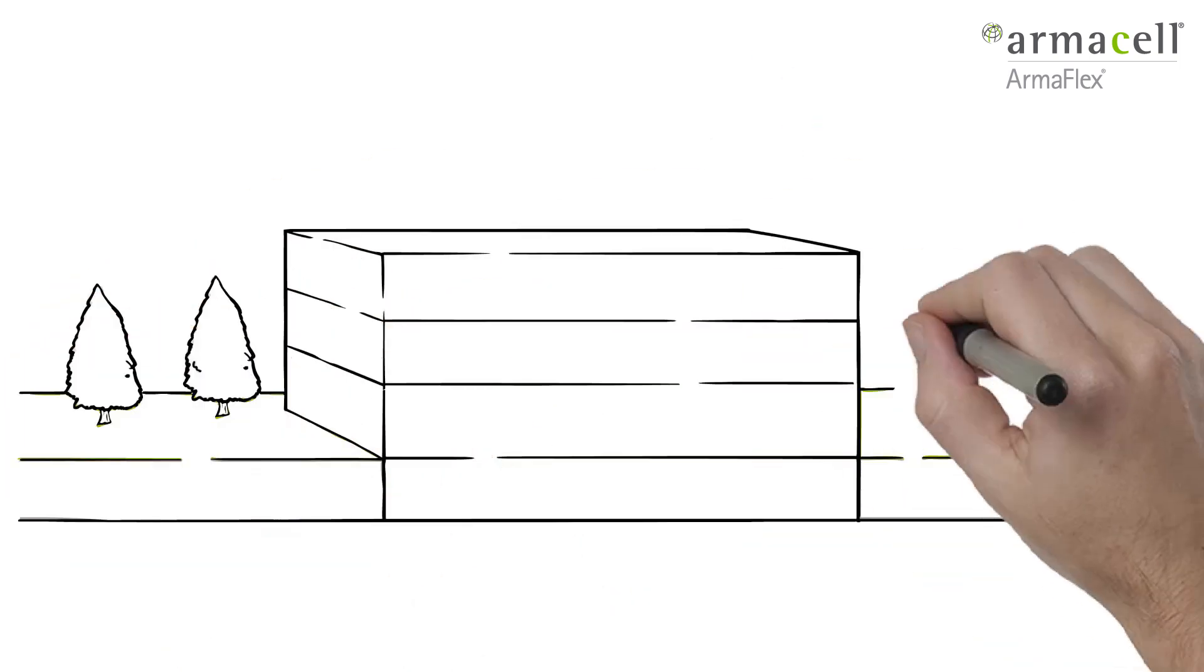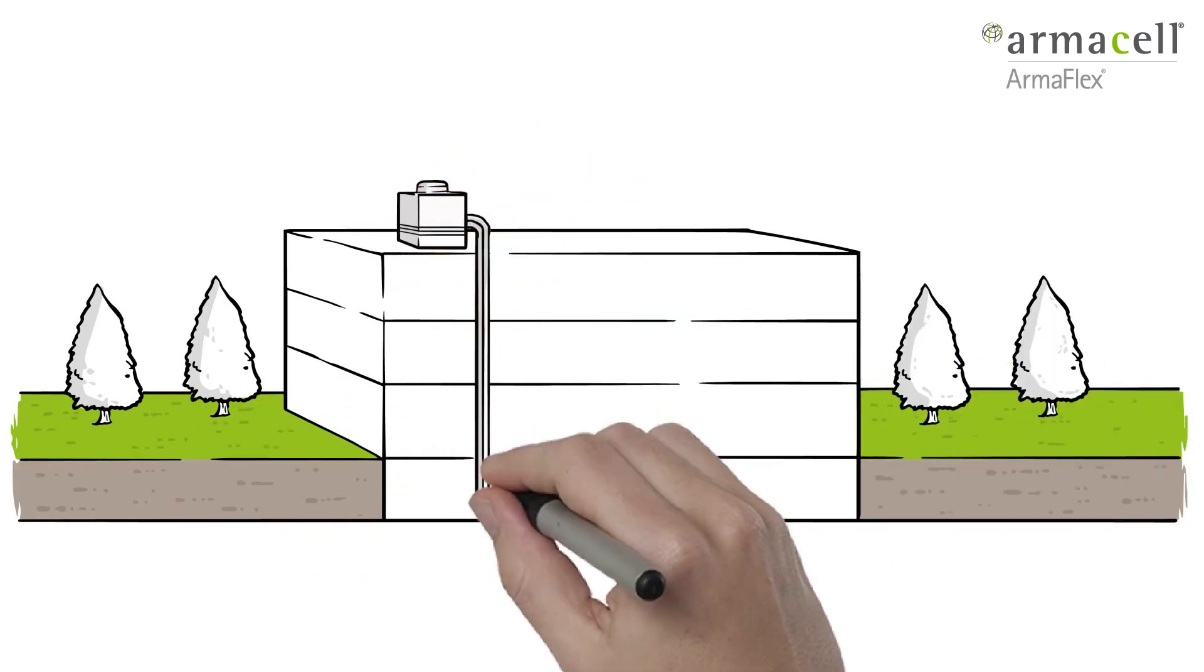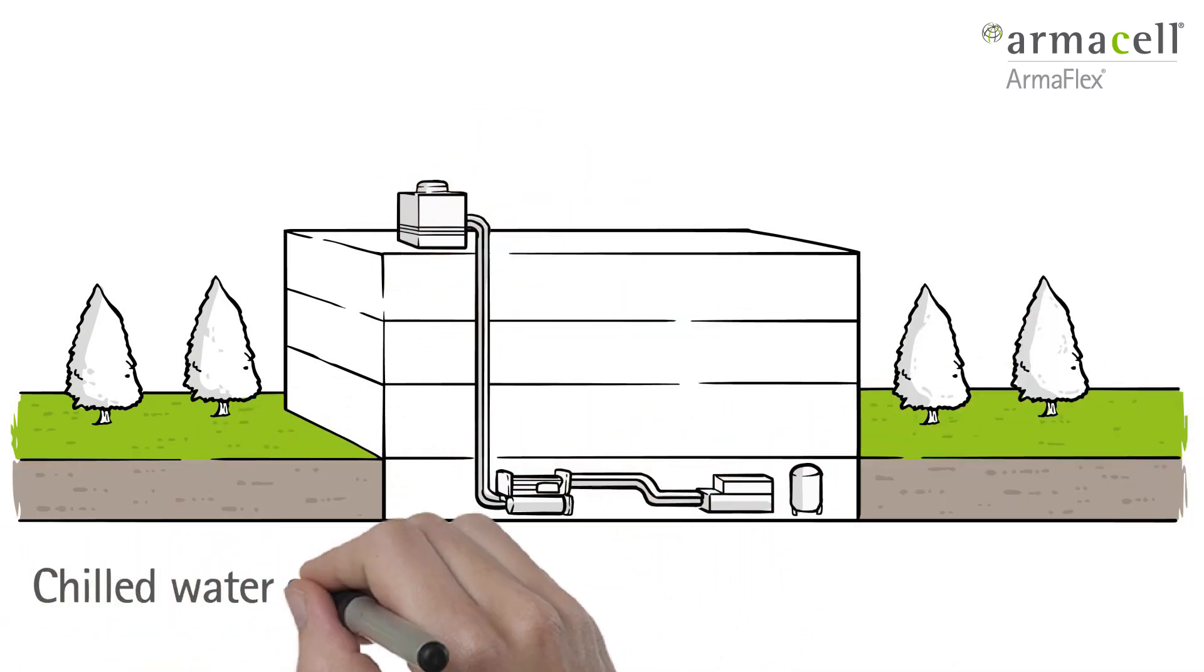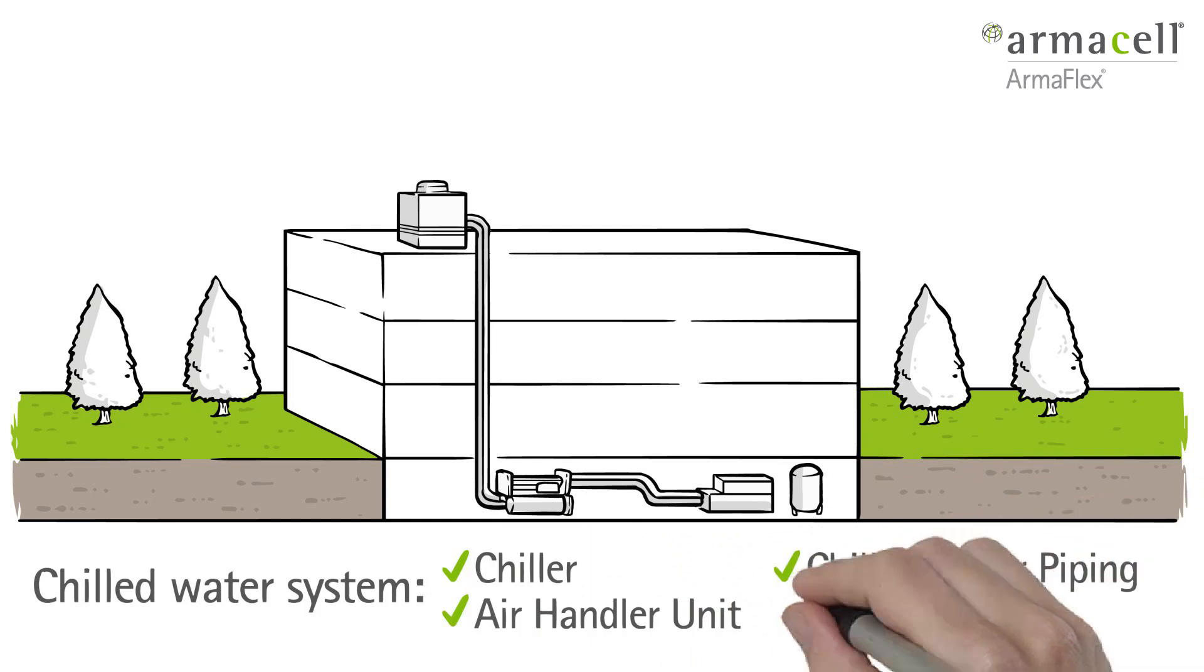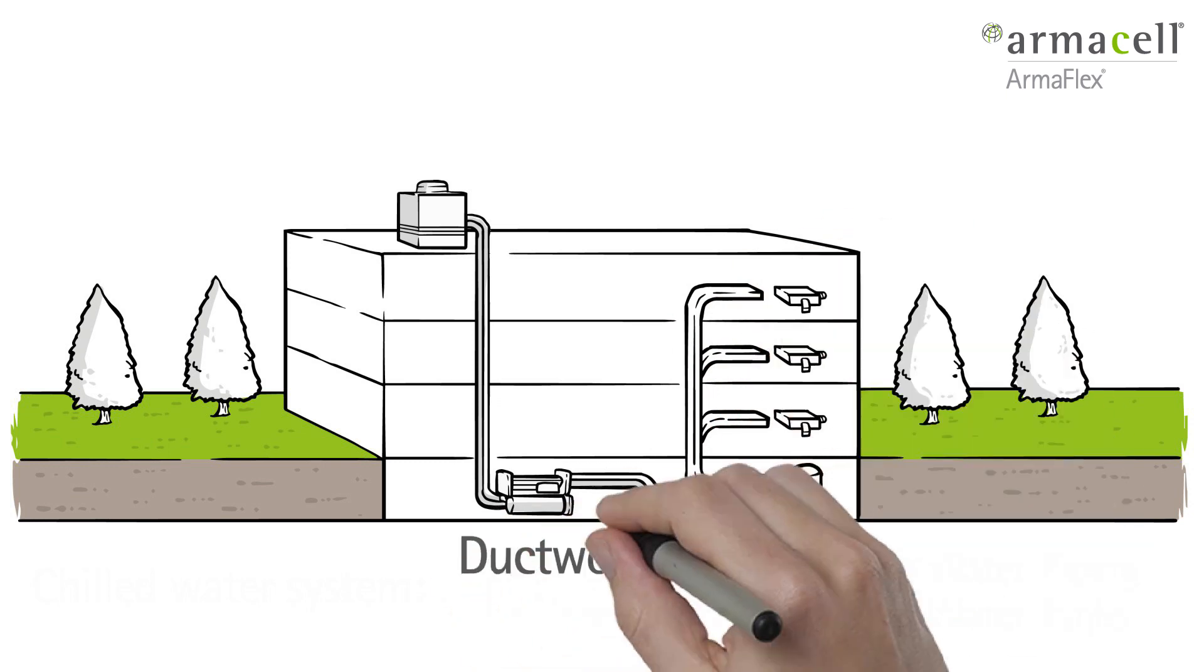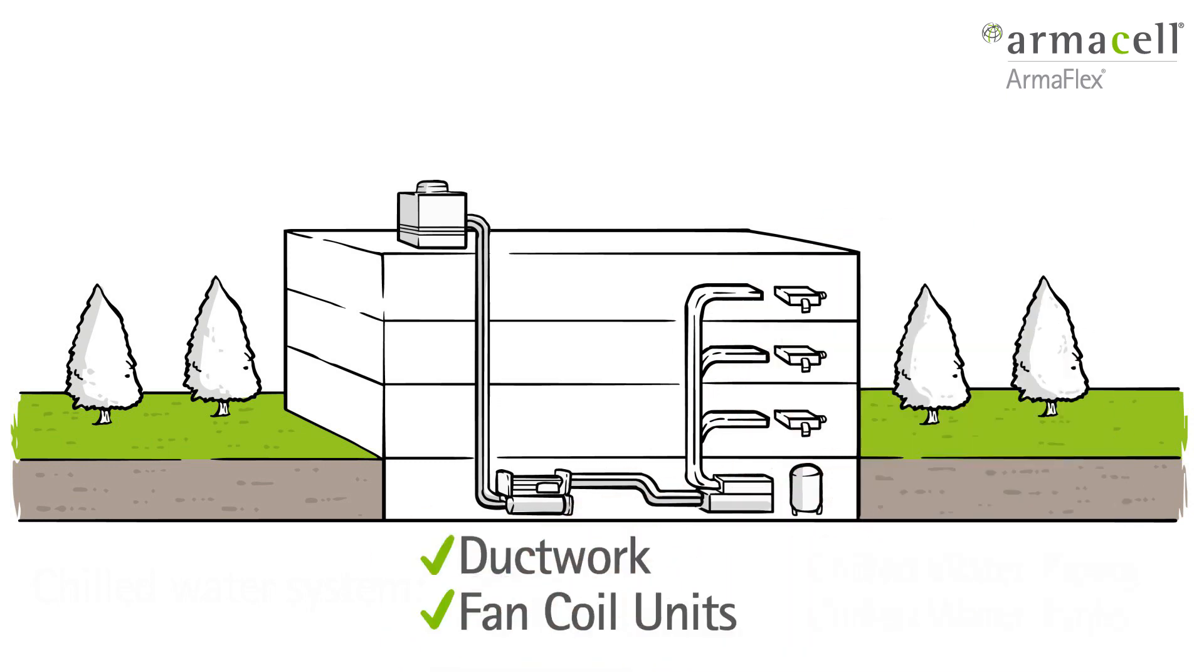You may know that its closed cell structure is good for many parts of a chilled water HVAC system, including the chiller, the air handler units, the chilled water piping and chilled water tanks. It's also ideal for lining or wrapping ductwork and insulating fan coil units.